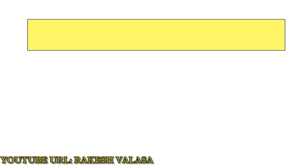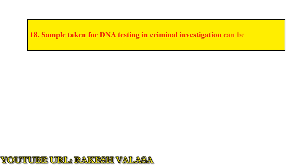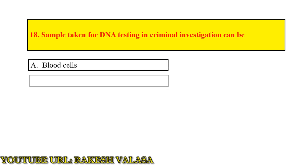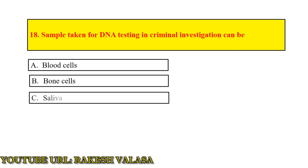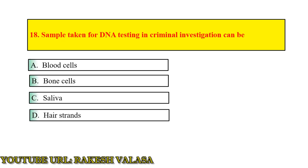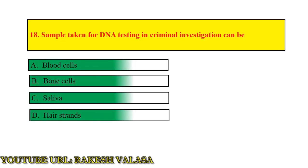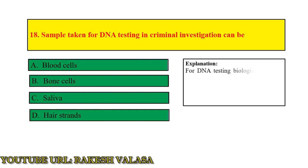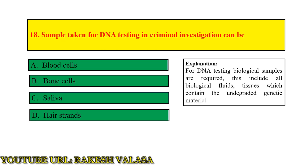Question number 18: samples taken for DNA testing in criminal investigation can be — answer: blood cells, bone cells, saliva, and hair strands. Explanation: for DNA testing, biological samples are required. These include all biological fluids and tissues which contain the intact genetic material.